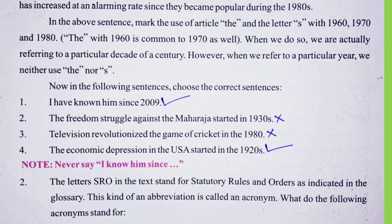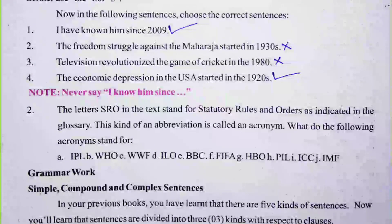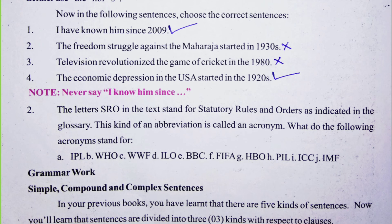Part two: The letters S-R-O in the text stand for 'Statutory Rules and Orders,' as indicated in the glossary. This kind of abbreviation is called an acronym. Acronyms are abbreviations like S-R-O, I-P-L, W-W-F, and others that have become words in themselves.